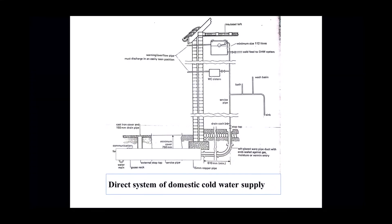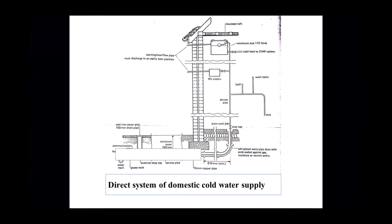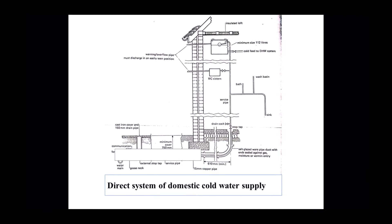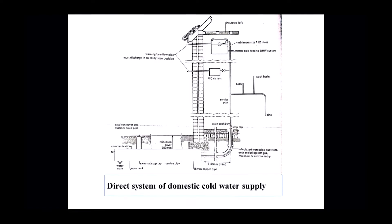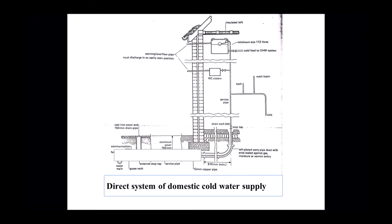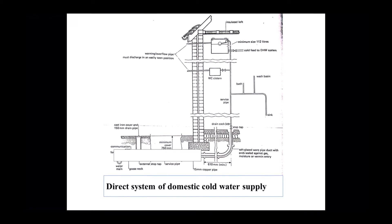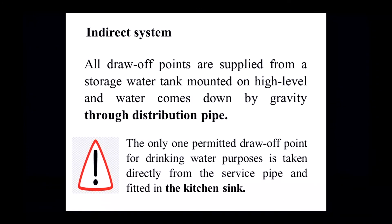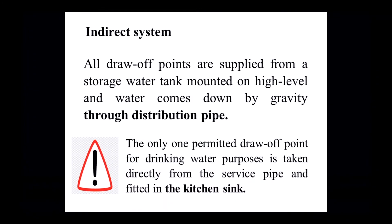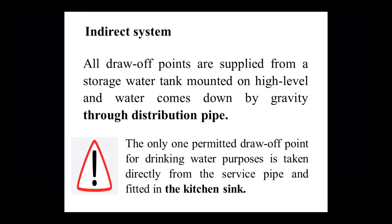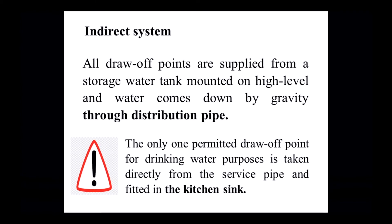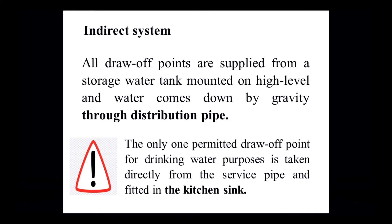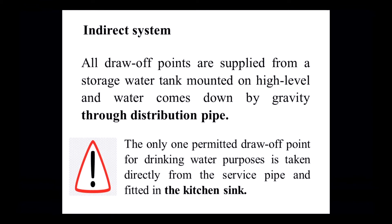There is a diagram showing the design of the direct system, illustrating exactly what has been explained. You can see where it starts and where it ends. In the indirect system, all draw points are supplied from a storage water tank mounted at a high level, and the water comes down by gravity through the distribution pipe.